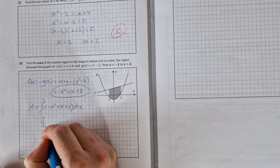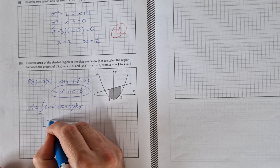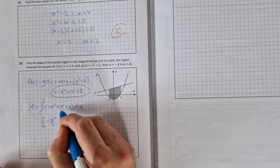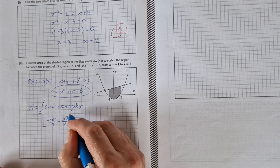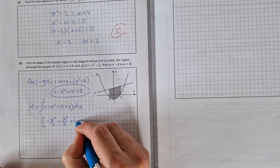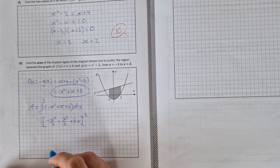We integrate. Integrating -x² you'll get -x³/3, integrate x you get x²/2, and integrate 6 you'll get 6x. And we are going to evaluate that between -1 and 2.